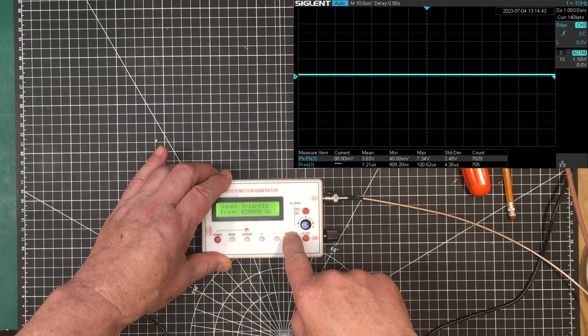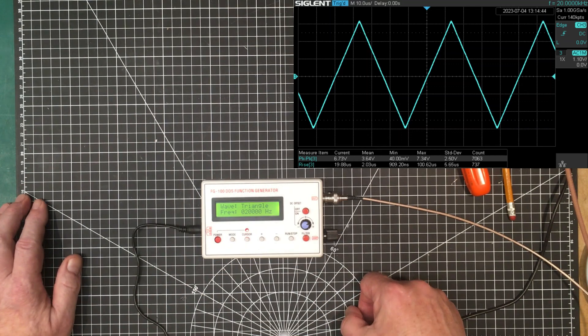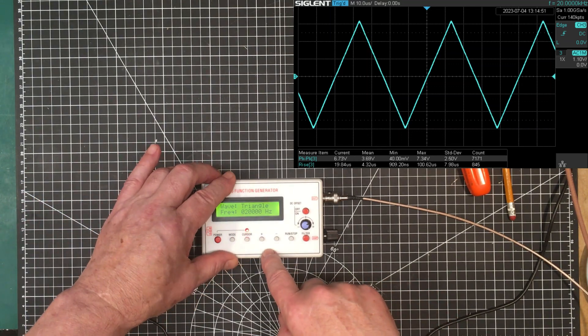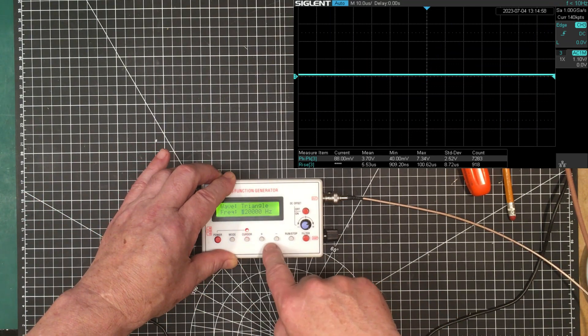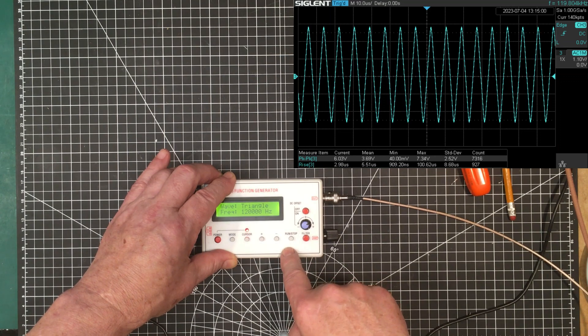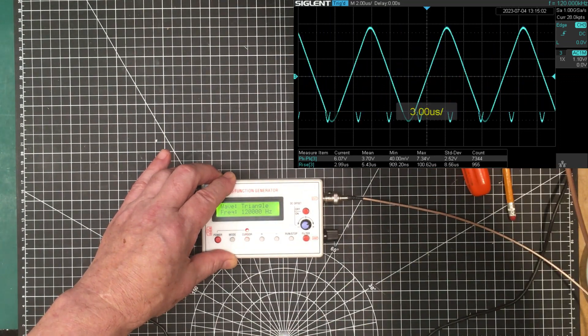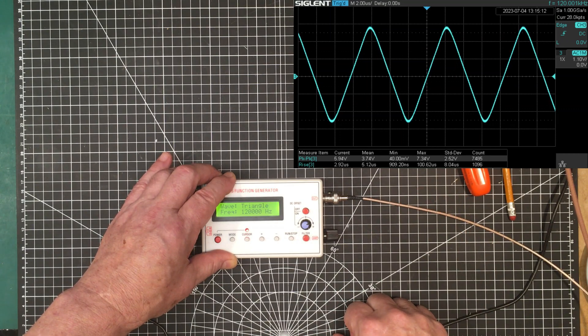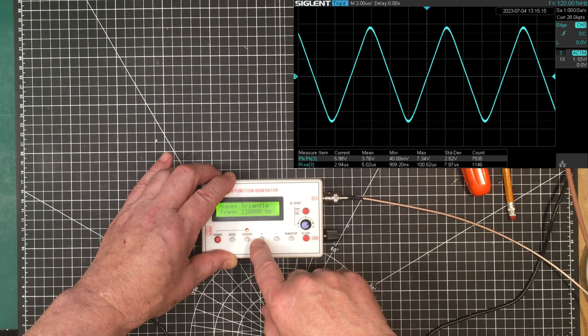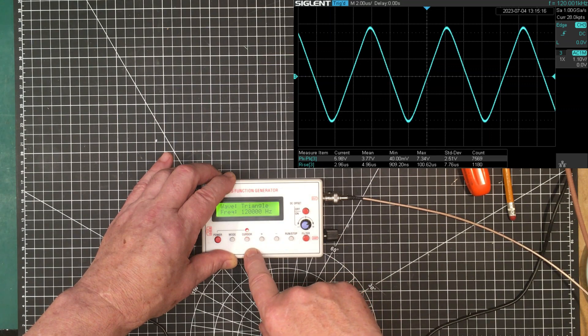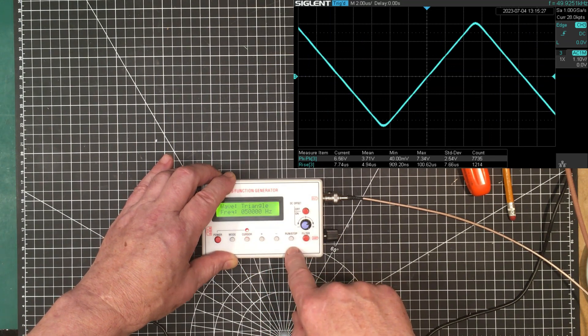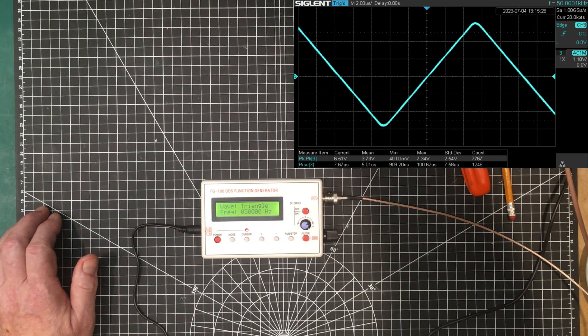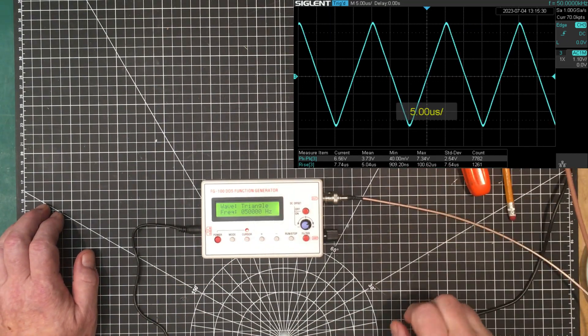Let's try triangle. That's actually pretty nice. Let's try that up a little bit higher. Still kind of triangular, we're getting a little bit more of a sine wave. I guess there just aren't enough harmonics there. Let's back it off down to, we'll try for 50 kilohertz. Well that's passable.